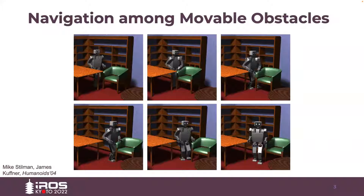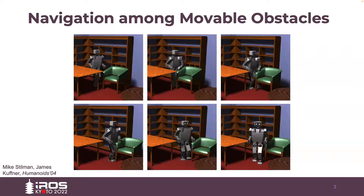In the early 2000s, some researchers, including Mike Stillman, started working on a different problem where a robot needs to navigate an environment where movable objects might exist. For instance, in this image, a robot can cross a room only by pushing a chair aside. The problem is called Navigation Among Movable Objects or Obstacles, or NAMO for short, and it is theoretically proved to be NP-complete.